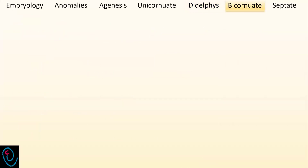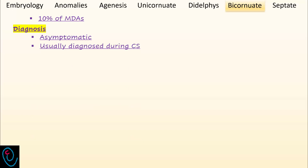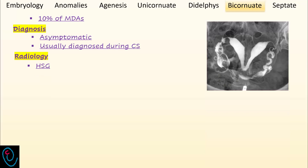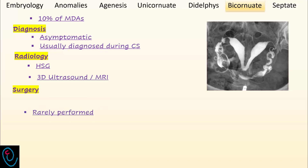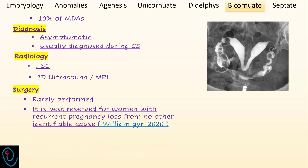Bicornuate uterus accounts for about 10% of Müllerian duct anomalies. The condition usually remains undiagnosed until a cesarean section or other procedures for evaluation of the uterine cavity reveal its existence. Hysterosalpingography will reveal two uterine cavities; however, it cannot differentiate between a bicornuate and a septate uterus. 3D ultrasound or MRI are required to differentiate between the two conditions. Surgery in the form of metroplasty is rarely performed and is best reserved for women with recurrent pregnancy loss and no other identifiable cause.